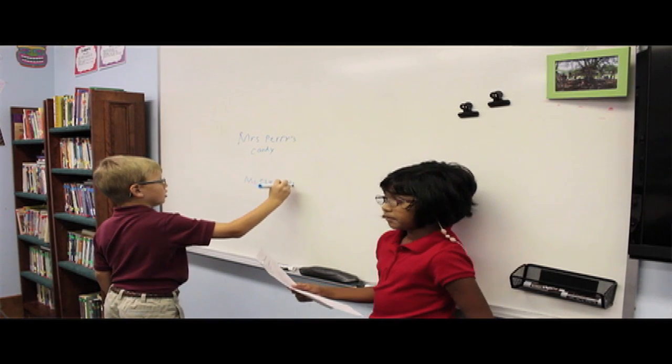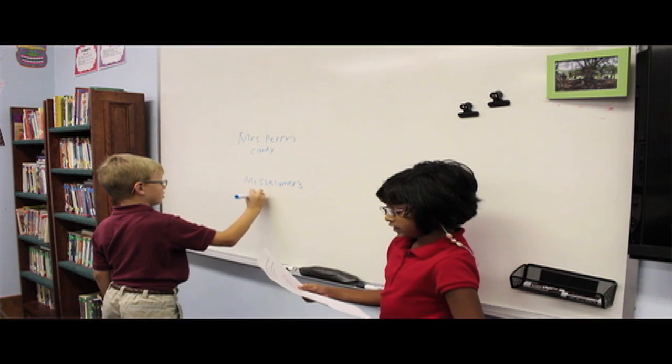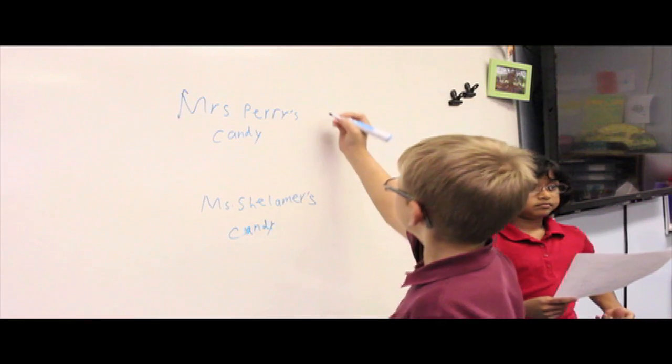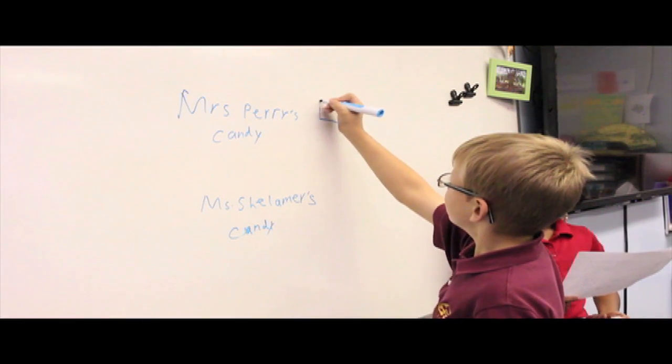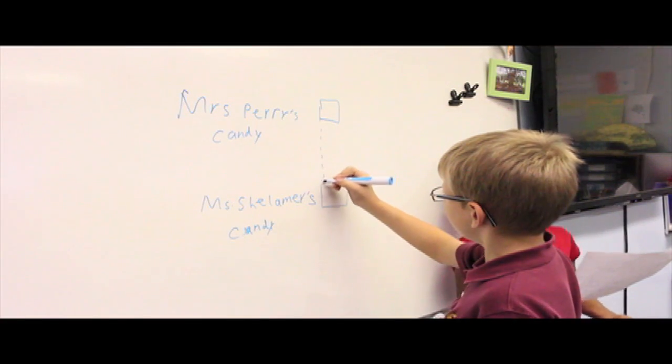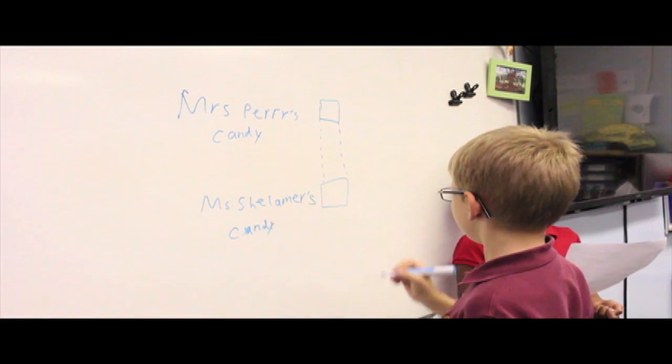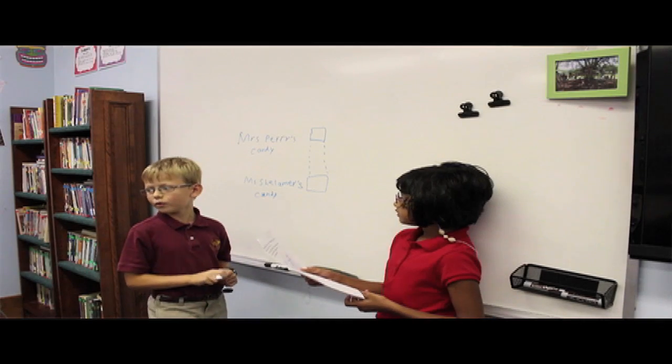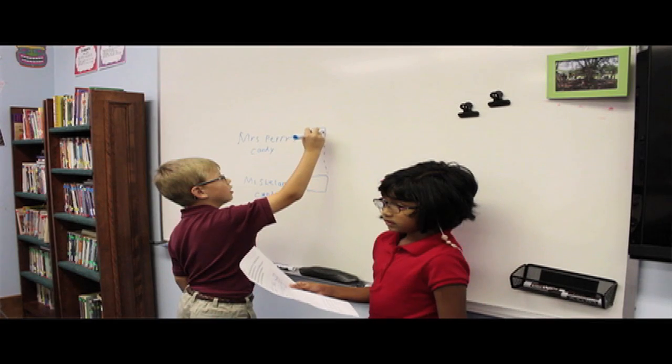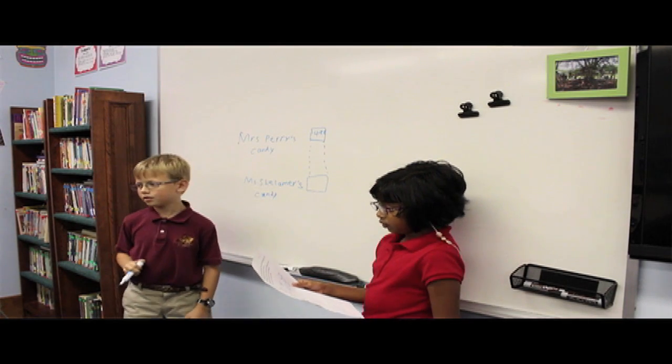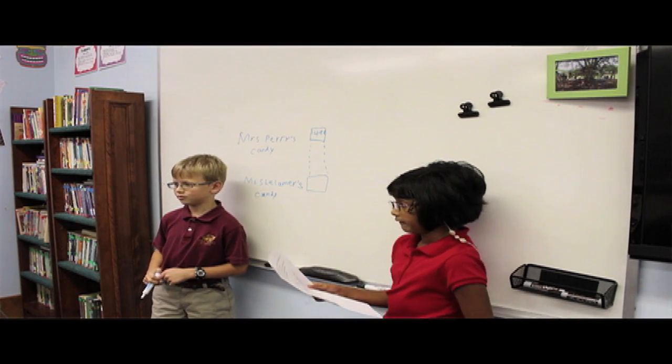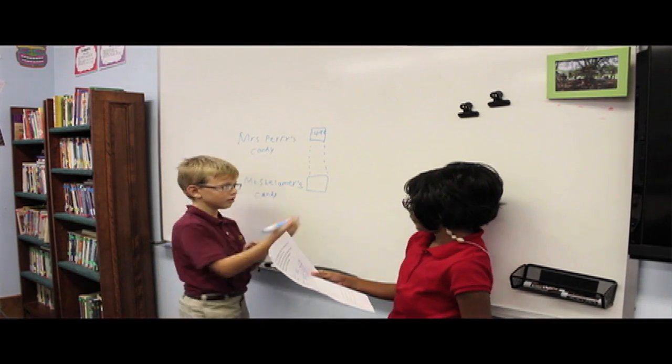Then we draw unit bars of equal length. Since there are 2 people there are 2 unit bars. And we read the first sentence. Mrs. Perry has 498 pieces of candy. It is a part so it will go in her box. Then we read the second question. Mrs. Shalmar has 79 more pieces of candy than Mrs. Perry. So we add a chunk and put 79 in it.